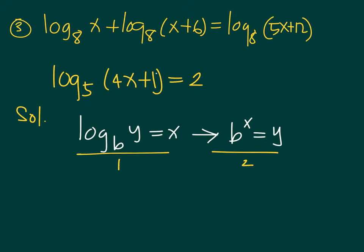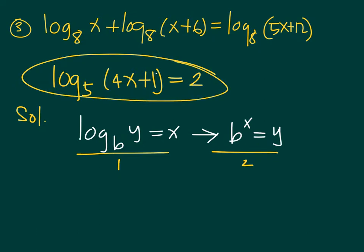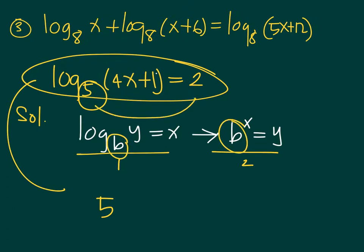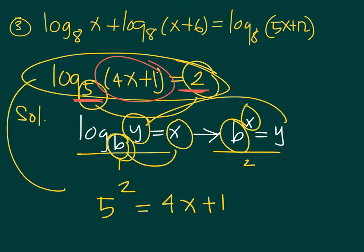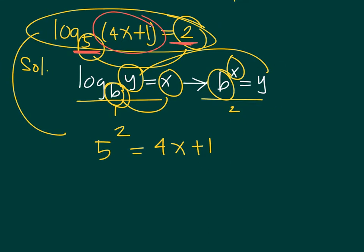Following the relationship between logarithmic and exponential equations, we transform this into exponential form by taking the base 5 and raising it to the exponent 2, which equals 4x+1. So we have 5 squared equals 4x+1. From a logarithmic equation, this is now reduced into a linear equation: 25 equals 4x+1.